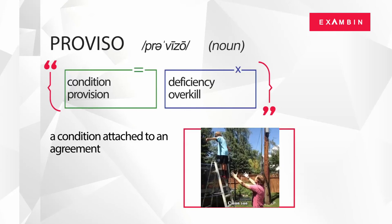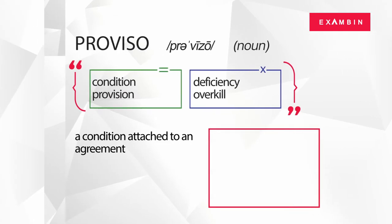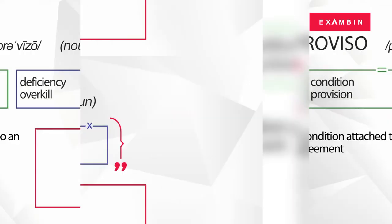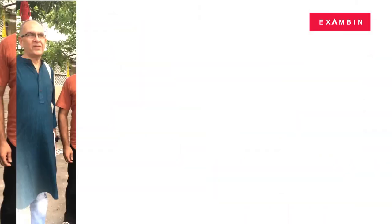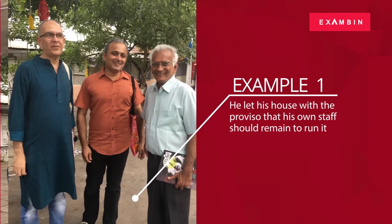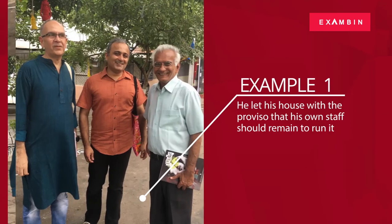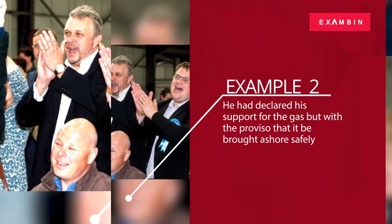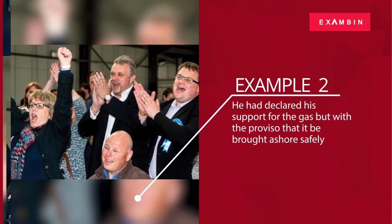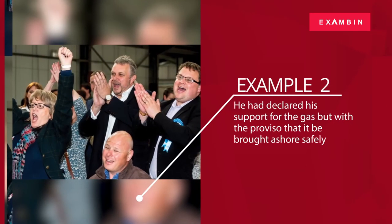We will see a few examples to understand the word proviso better. Example one: he let his house with the proviso that his own staff should remain to run it. Example two: he had declared his support for the gas, but with the proviso that it be brought ashore safely.